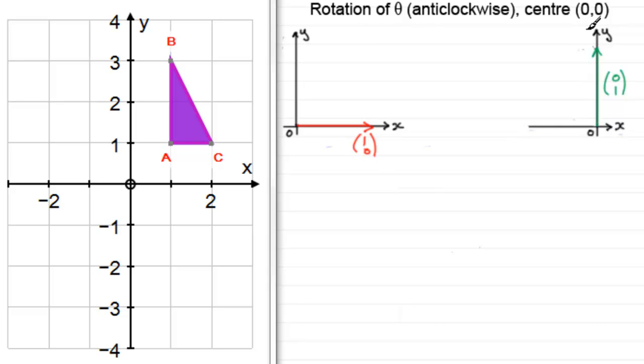Now, if we turn each of these through theta degrees or radians anti-clockwise, then the red vector (1,0) is going to end up in that position, and the green vector (0,1) is going to end up in that position, where the angle theta is this angle in here.